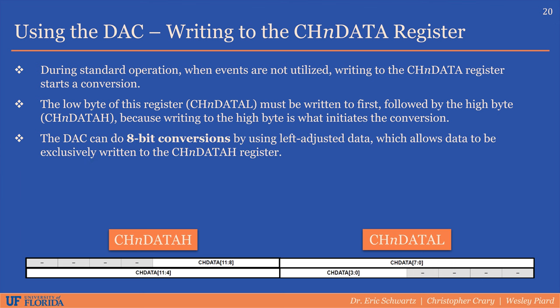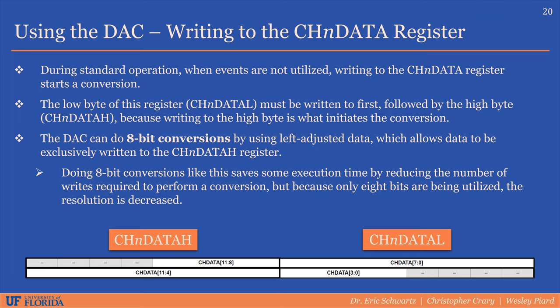It's possible to do 8-bit conversions with the DAC module using left adjusted data, which allows you to exclusively write to the data high register. Doing 8-bit conversions has some pros and cons. The main benefit is that it saves you from having to do an extra write to the low register, but the downside is that you lose 4 bits of resolution, which for some applications could be very critical, but for some it may not matter.